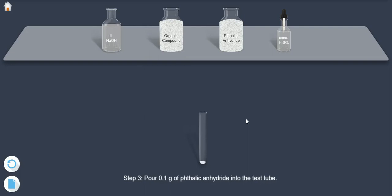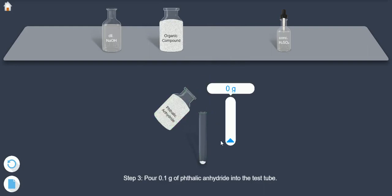Step 3: Pour 0.1 gram of phthalic anhydride into the test tube.